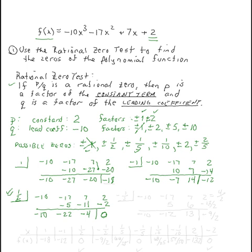For convenience and completeness, feel free to use a table function on a calculator. We'll try one more: x=negative 1/2. Coefficients: negative 10, negative 17, 7, and 2. Negative 1/2 times negative 10 gives positive 5; adding gives negative 12; multiplying gives positive 6; adding gives 13; one half of 13 gives a fraction — negative 13/2. Since 2 equals positive 4/2, adding these values gives negative 9/2. Not a zero.